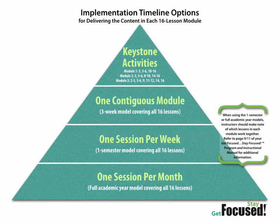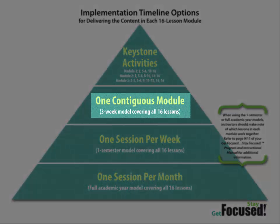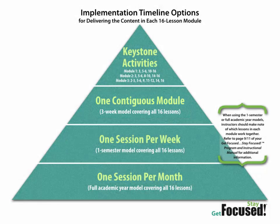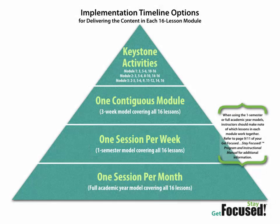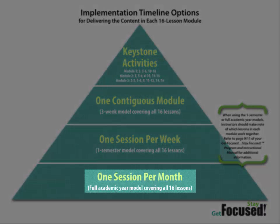This is a graphic that we'll have available for download as well, which shows some of those implementation strategies. At the top of the pyramid you'll see we've identified some keystone activities — identified by teachers and counselors and administrators in professional development workshops who said, if we couldn't teach all 16 lessons, these are the ones we want to be sure we hit every year. Another way of implementing would be one contiguous module — teaching all of Module 1 in a three-week model, getting through all 16 lessons. We originally intended the implementation to follow that guideline, thinking the month of May after state testing would be the perfect time. However, everyone's master schedule is different, so another model would be teaching a lesson per week over the course of a semester, or one session per month over the entire year.